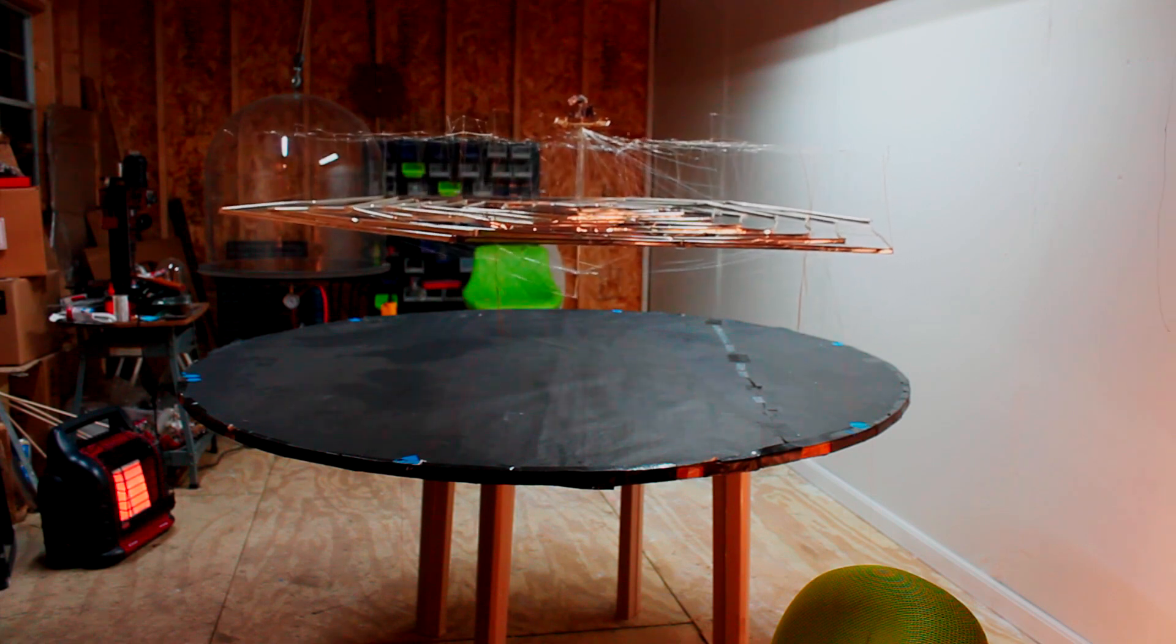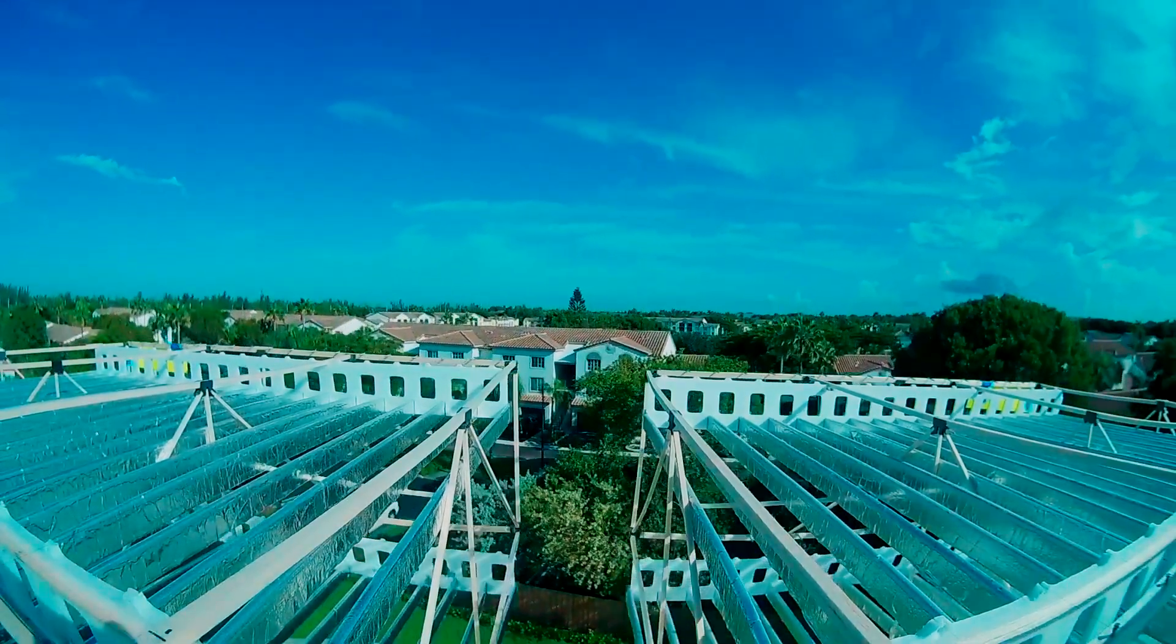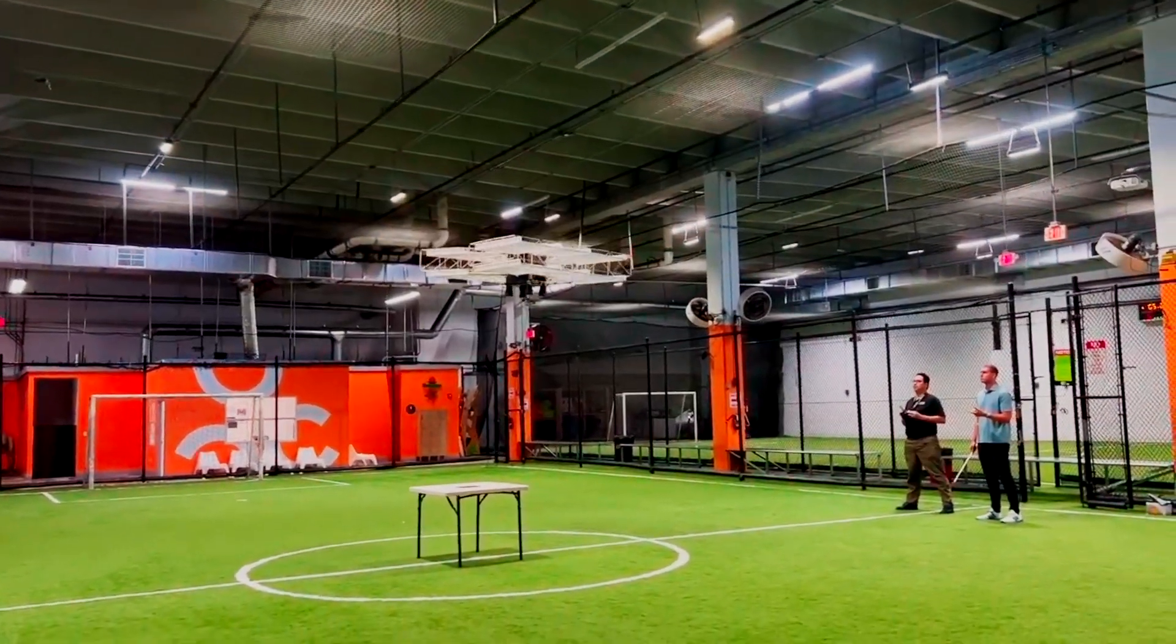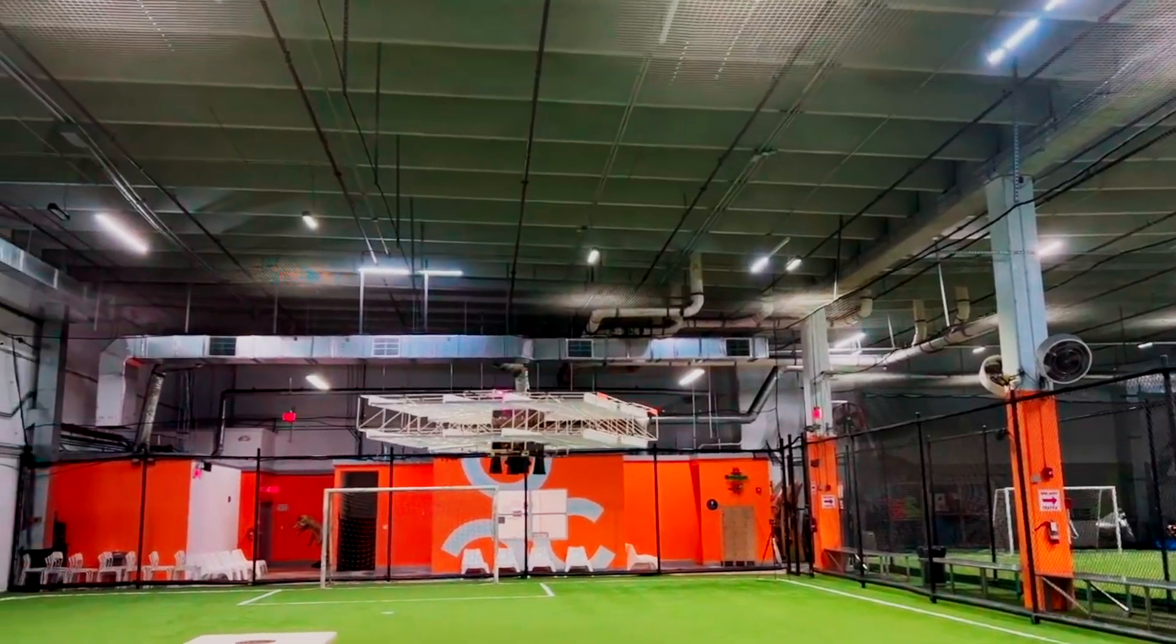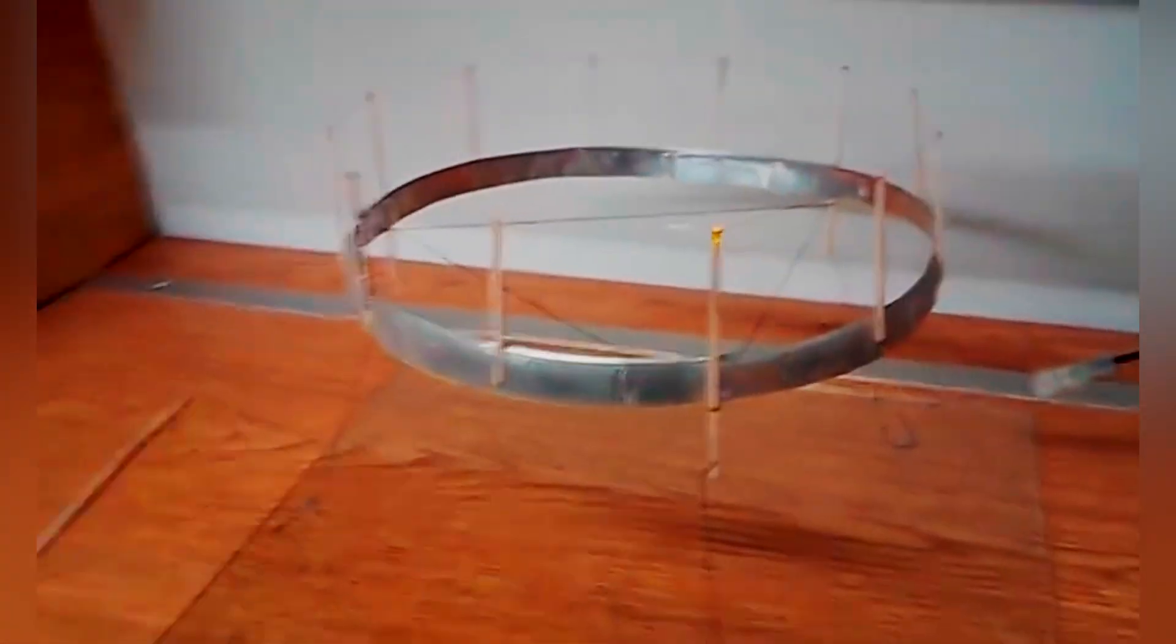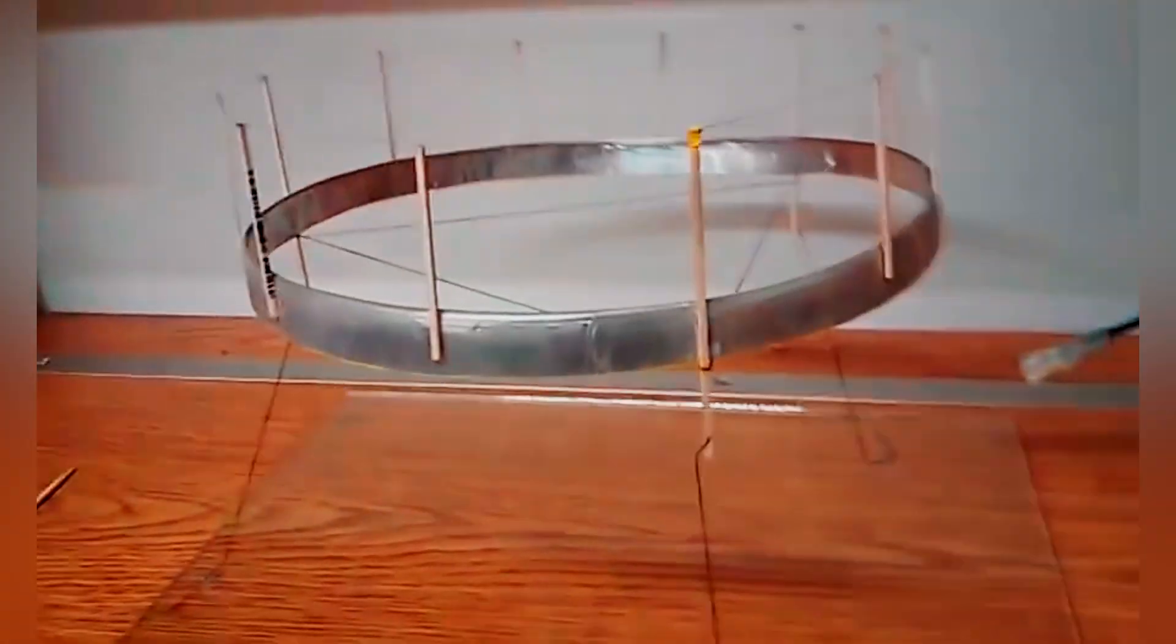Another side project worth noting is the Ventus, which attempts to use ion stabilization with a ducted fan in the middle for lower decibels. It's still a work in progress and nothing revolutionary has come to fruition. Ultimately, ion propulsion is very interesting because there are no moving parts, but it's very tricky to incorporate an onboard power supply, and these types of drones have very limited maneuverability.